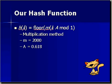M is given as 2000. A is given as 0.618, which is Knuth's recommended value. A is usually, or is always, between 0 and 1.